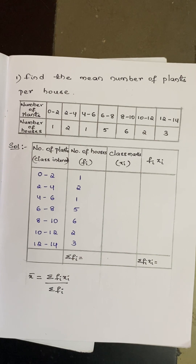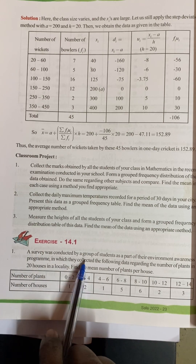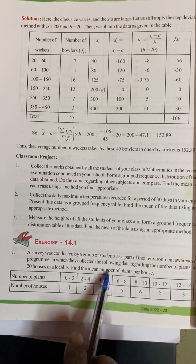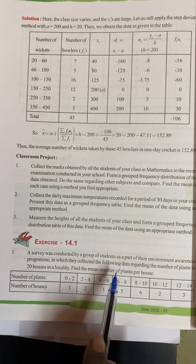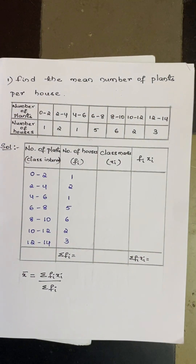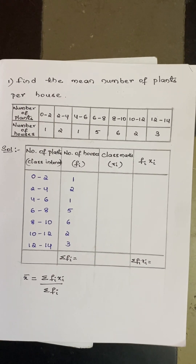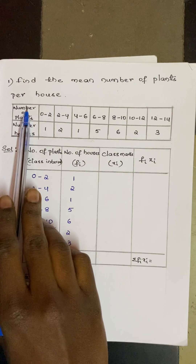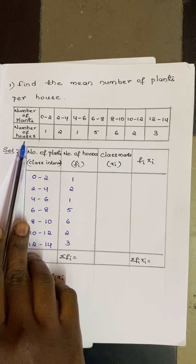The question for this is Example 14.1: A survey was conducted by a group of students as part of an environment awareness program, in which they collected data regarding the number of plants in 20 houses in a location. Find the mean number of plants per house. They didn't mention any method, so we can use the method of our choice.